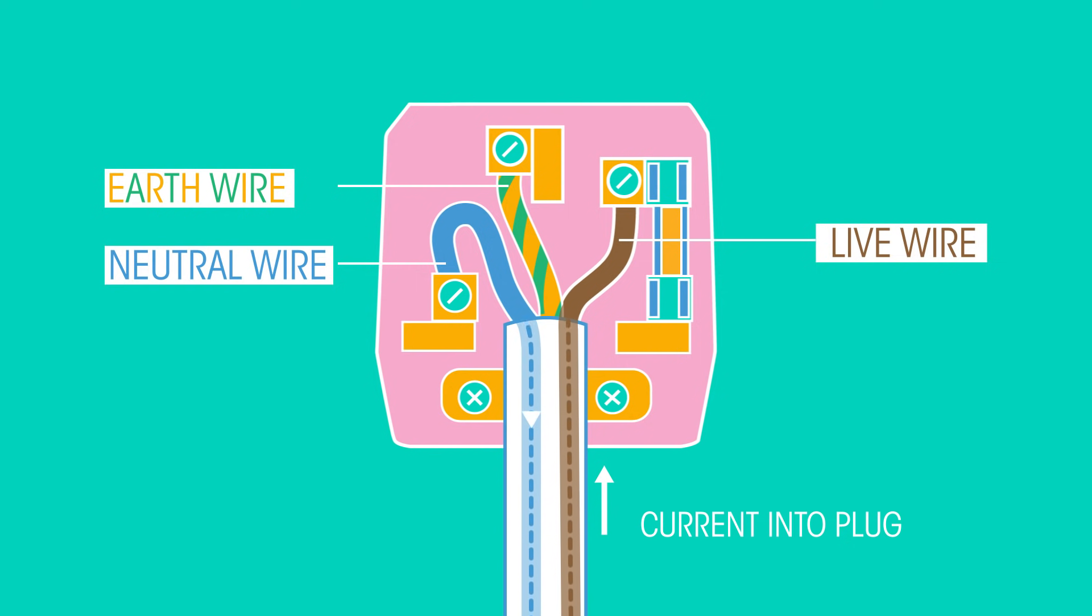The neutral wire completes the circuit. It is the route the electric current takes when it exits an appliance. Neutral wires have a voltage close to zero.